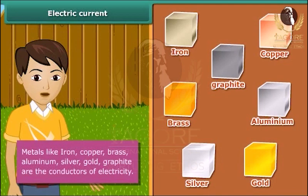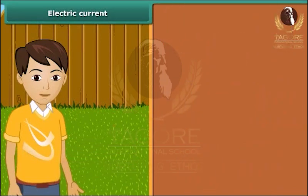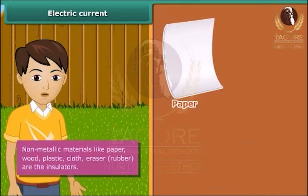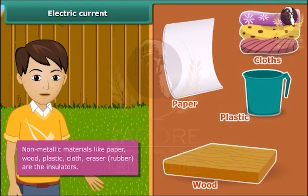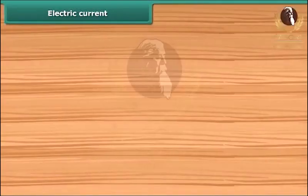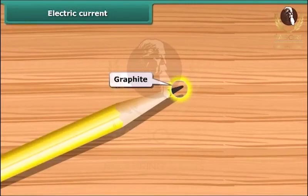Insulators are also known as non-conductors of electricity. Paper, wood, plastic, cloth, eraser, and rubber are insulators. Pencil lead is made of graphite. It is a form of carbon. It is a non-metal but it is a conductor of electricity.